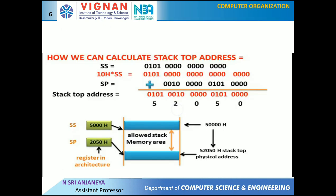Let us see an example of how to calculate the stack top address. Take SS value as 5000 and SP value as 2050. The combination of SS and SP points to the stack top. The stack segment register contains the upper 16 bits of the starting address of the stack segment. To get the 20-bit physical address, multiply SS by 10 hex — equivalently, shift the binary value left by 4 bits — then add SP to the shifted SS value. In this example, the stack top address is 52050H, which is the present stack top address.